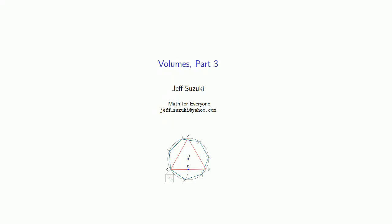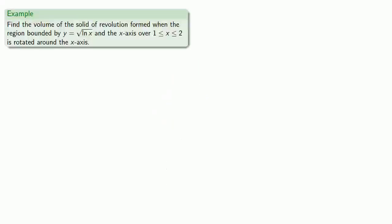Let's take another look at a volume of a solid of revolution. Find the volume of the solid of revolution formed when the region bounded by y equals square root log x and the x-axis over the interval between 1 and 2 is rotated around the x-axis. So first let's graph that region.